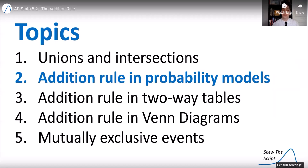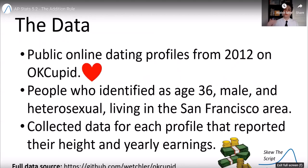Now let's talk about the addition rule and probability models. And let's talk about the data we're going to use here to explore our topic today. So I found some data on public online dating profiles from 2012 on the site OKCupid. The data set is of people who identify as age 36, male, heterosexual, and living in the San Francisco area. And I collected the data for each profile that reported their height and their yearly earnings.